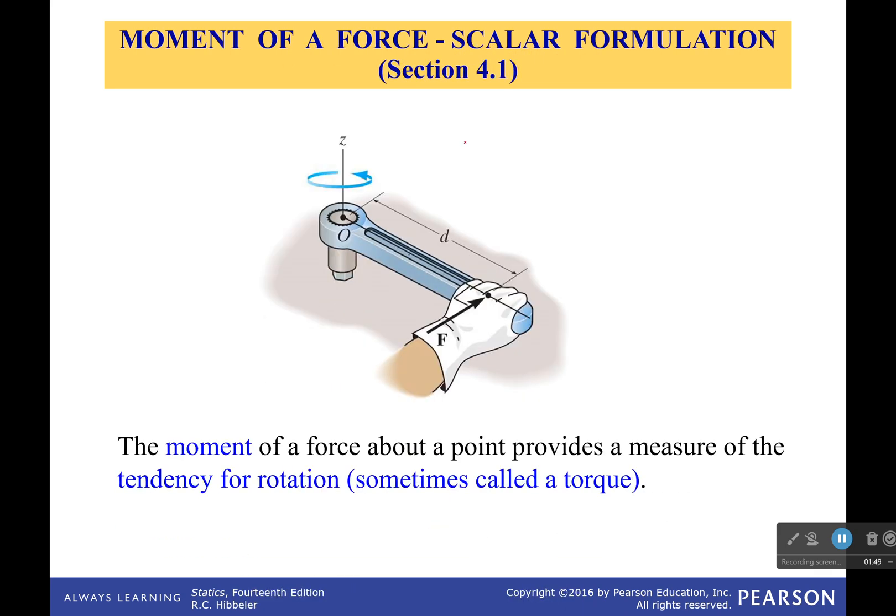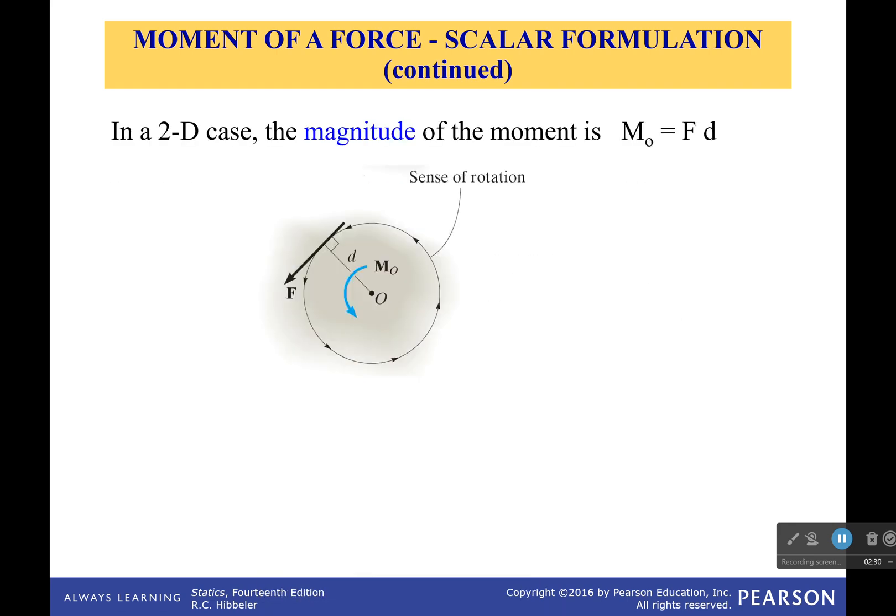So the first thing we're going to do is calculate the moment of force using the scalar formulation. Now a moment is the tendency for rotation. How much does this thing want to rotate? If you're applying a moment, then it's going to have to resist that moment to keep from rotating. Now a moment is a vector, just like forces and just like a lot of things we do in this class. However, when you see this little line right here, this is a curvy vector. This is not the vector. The vector is a straight line that this curves around.